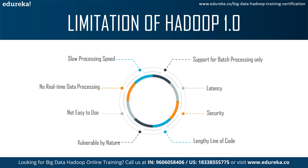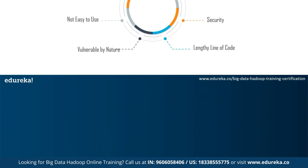The fifth point is that it is not easy to use — in Hadoop MapReduce, developers need to hand-code each and every operation which makes it very difficult to work. The sixth point is security — managing complex applications is challenging in Hadoop. If the user doesn't know how to enable or manage the platform, data can be at huge risk. Storage-level encryption is missing, which is a major concern. Point seven is that Hadoop is vulnerable by nature, being written entirely in Java — the most widely exploited language by cyber criminals. The eighth point is its lengthy line of code — Hadoop has around 120,000 lines of code, producing numerous bugs and taking more time to execute.